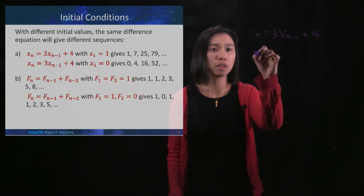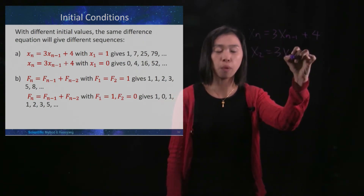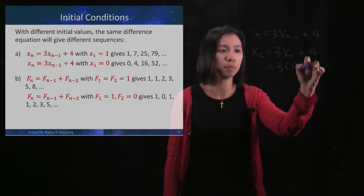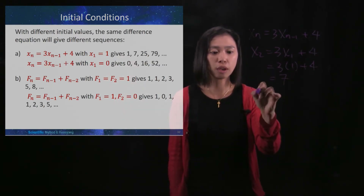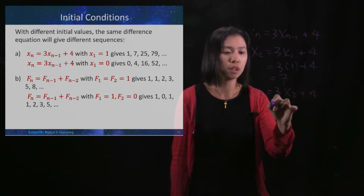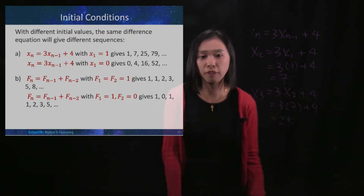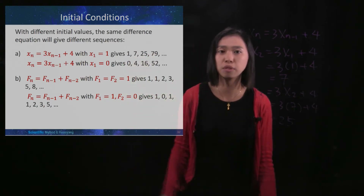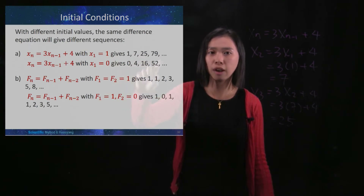We'll work on the first one first. x₂ = 3x₁ + 4. Since x₁ = 1, we get 3 times 1 plus 4, which is 7. So x₂ = 7. Then x₃ = 3x₂ + 4 = 3 times 7 plus 4, which is 25. And then 3 times 25 plus 4 gives you 79. So with x₁ = 1, you get the sequence: 1, 7, 25, 79.